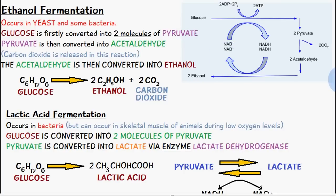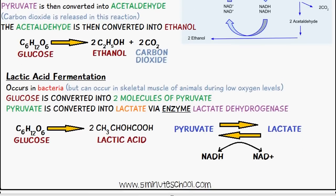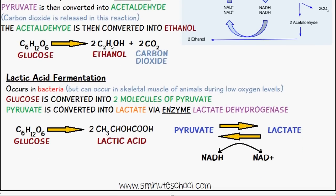That's ethanol fermentation. Now we're going to talk about lactic acid fermentation to finish off the video. Lactic acid fermentation occurs in bacteria, and it can also occur in skeletal muscles of animals during low oxygen levels. I've made a video on anaerobic glycolysis, which is very similar to this.